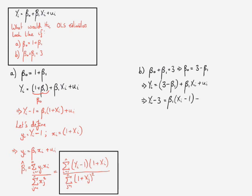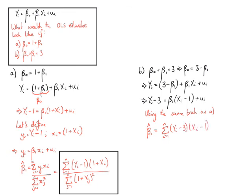We haven't changed anything about the relationship by doing this. We now have a dependent variable which is yᵢ minus 3 and an explanatory variable which is xᵢ minus 1. Using exactly the same trick as before, we write down our estimator for the slope parameter as the sum of the new dependent variable (yᵢ − 3) times the new explanatory variable (xᵢ − 1), divided by the sum of squares of (xᵢ − 1).